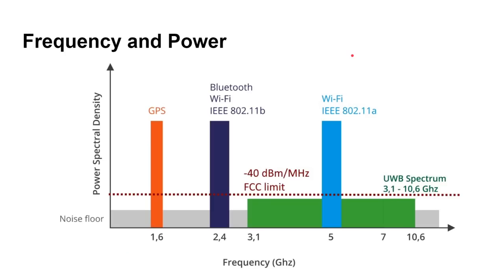Looking at the frequency spectrum, we can see GPS, 2.4GHz with Bluetooth and Wi-Fi, and 5GHz Wi-Fi — all relatively high power, around 100 milliwatts. But notice the minus 40 dBm noise floor — that's background noise from all the radio waves around us. UWB stays under that limit at very very low power, less than one milliwatt. It runs from 3.1GHz all the way up to 10GHz, a huge area.